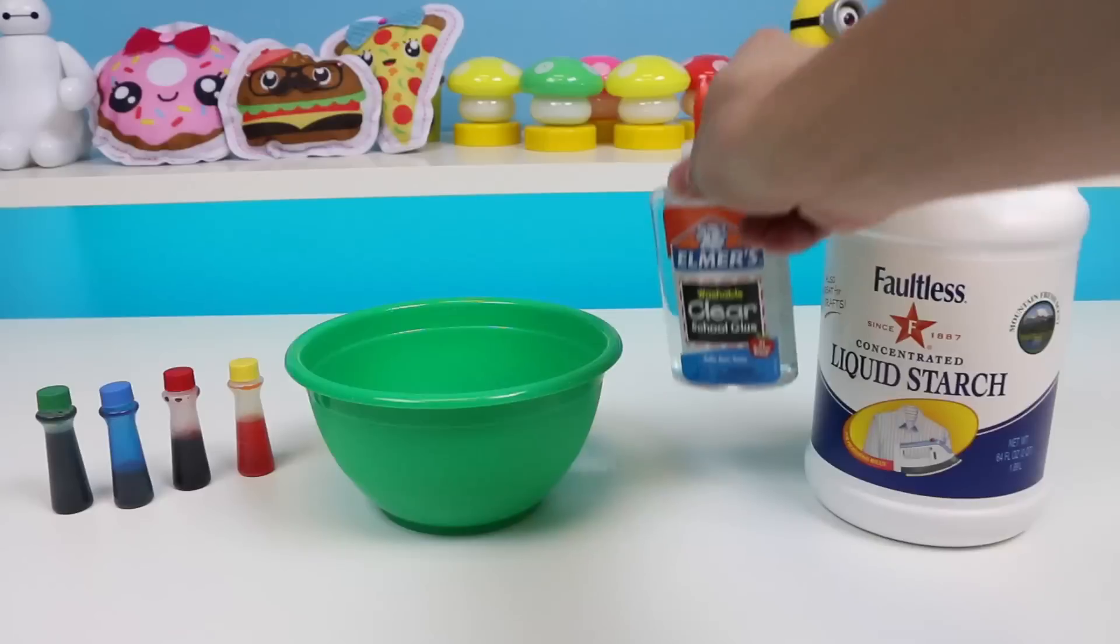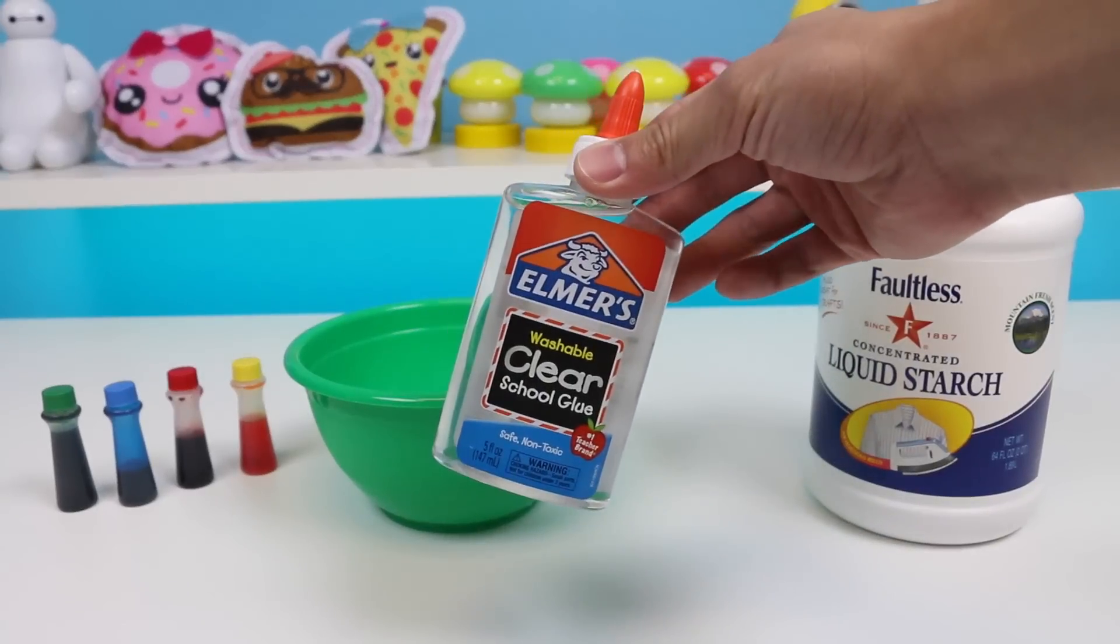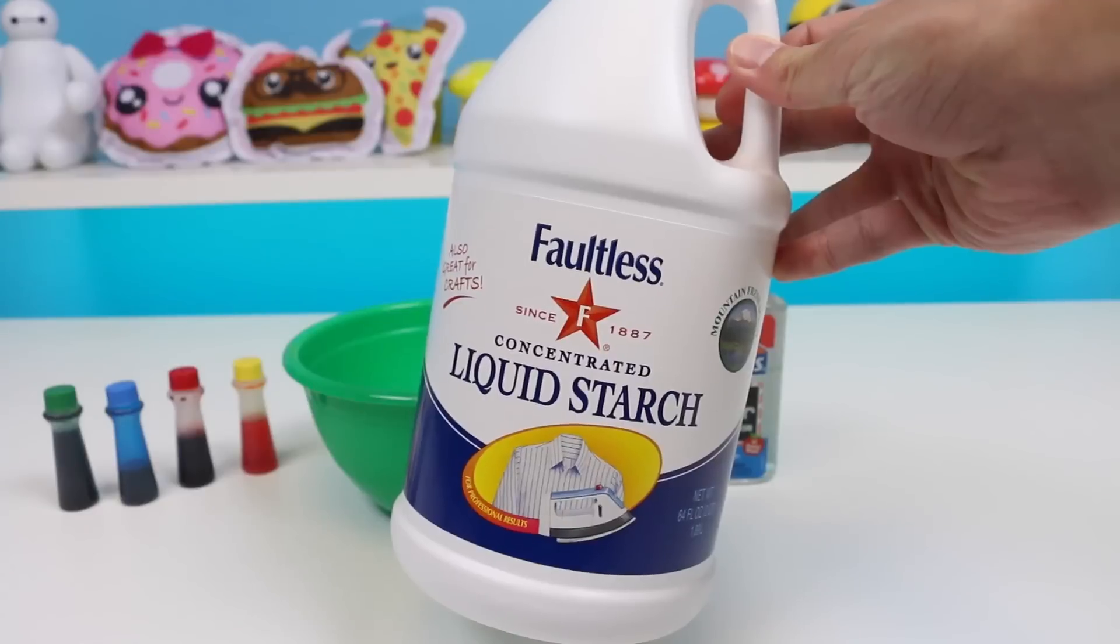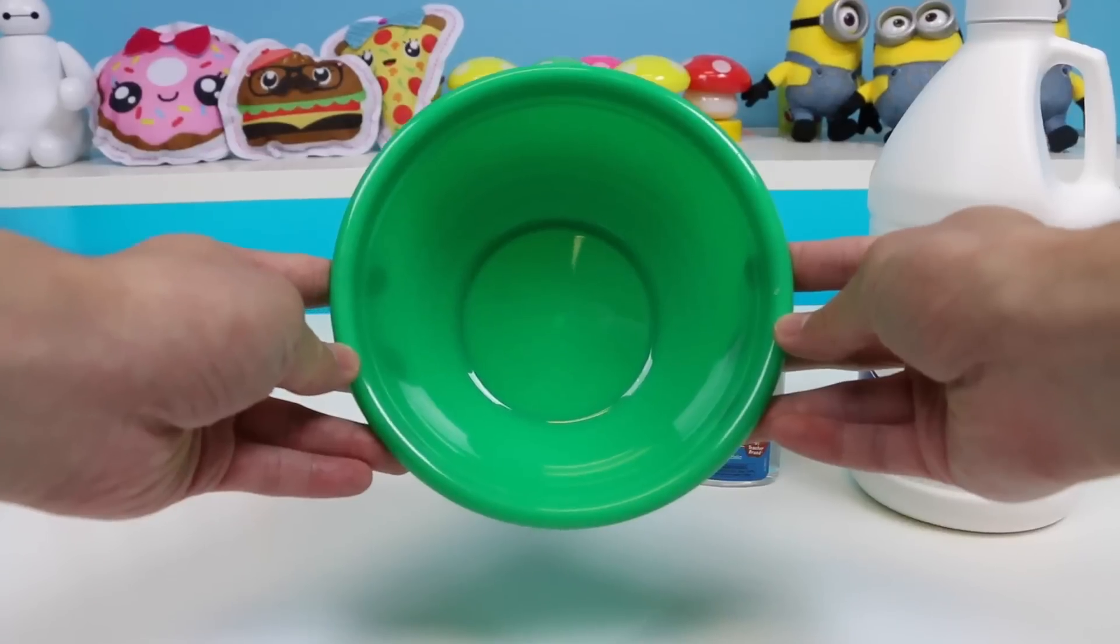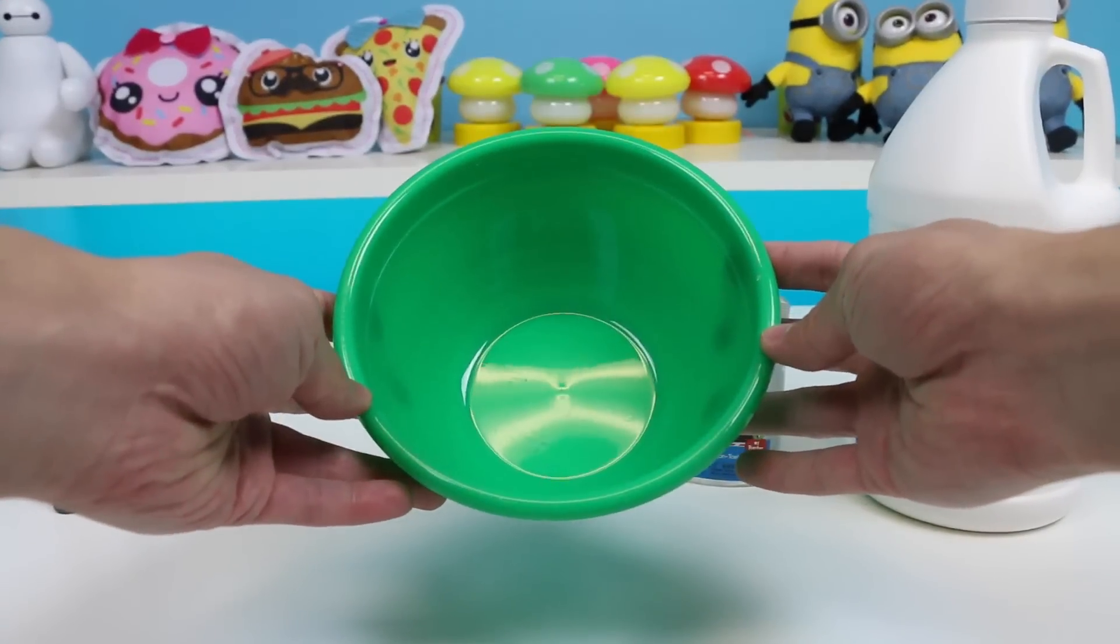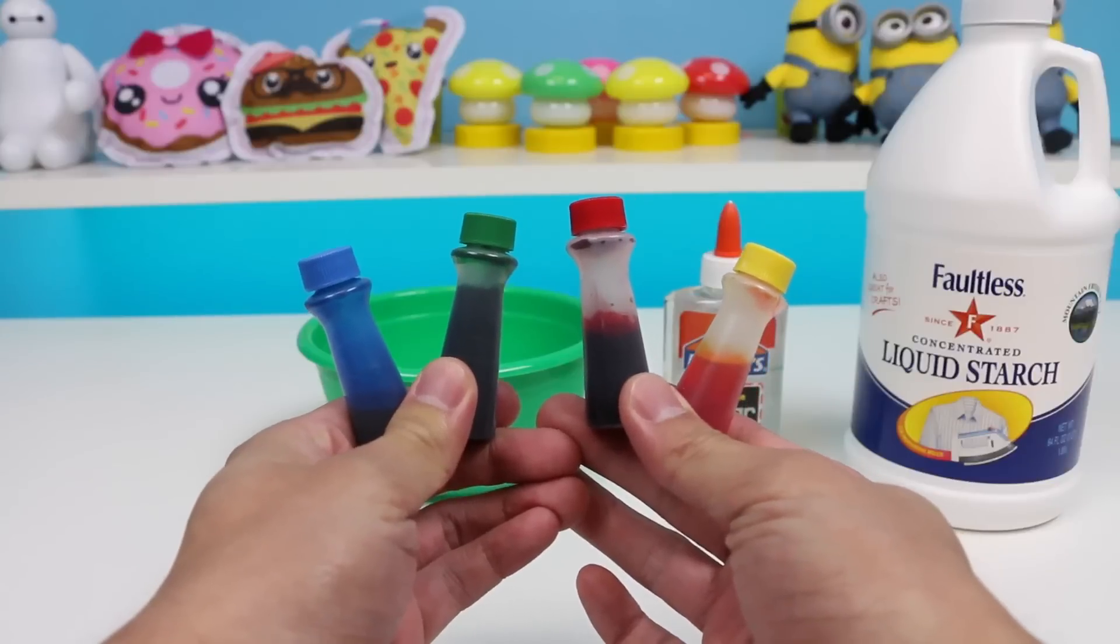Here's everything you'll need. You're gonna need Elmer school glue, highly recommend using the clear glue, some liquid starch, a bowl to mix everything in, and some food coloring!